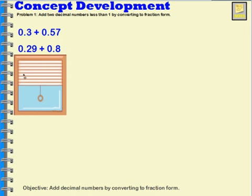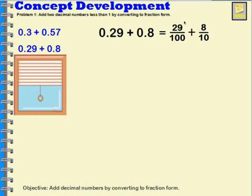So let's try this one: 0.29 plus 0.8. Well again, we don't want to think about just taking 29 plus 8 and adding them together. Let's think about these as fractions first. So here's 29 hundredths plus 8 tenths. I can look at this 8 tenths, think about it in an area model. Remember decomposing it into 100 parts, and I'll know that this will become 80 hundredths. So then I'll have 29 hundredths plus 80 hundredths.